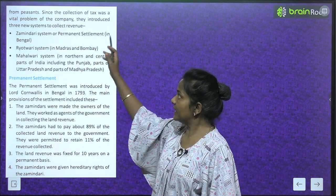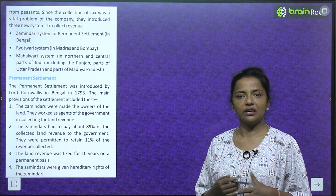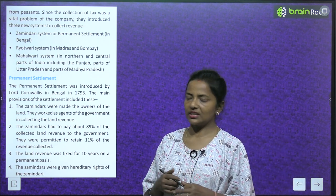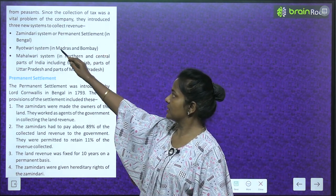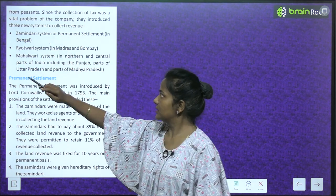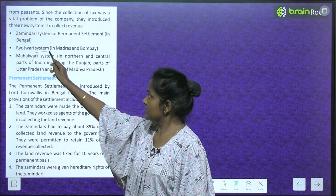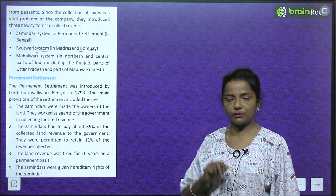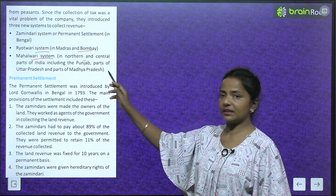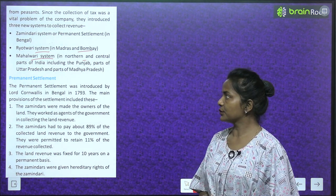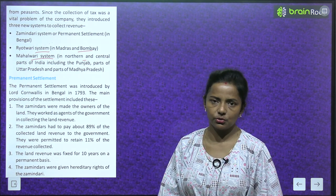Since tax collection was a vital problem for the Company, they introduced three new systems to collect revenue. These were: the Zamindari System, also called the Permanent Settlement, in Bengal; the Raitwari System in Madras and Bombay; and the Mahalwari System in northern and central parts of India, including Punjab, parts of Uttar Pradesh, and Madhya Pradesh.